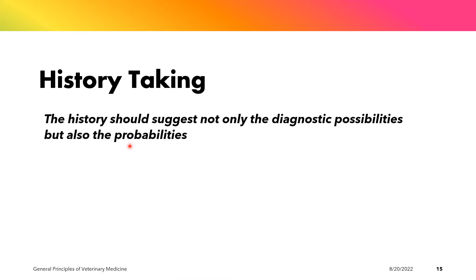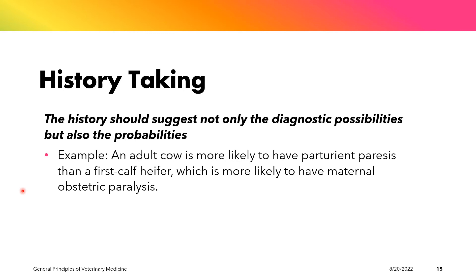Another important point in history-taking is that the history should suggest not only the diagnostic possibilities, but also the probabilities. For example, in cows, an adult cow is more likely to have parturient paresis, whereas a first-calf cow is more likely to have maternal obstetric paralysis. Naturally, in the clinical setting, adult cows are really susceptible to parturient paresis as compared to first-calf cows, which are more prone to developing maternal obstetric paralysis.